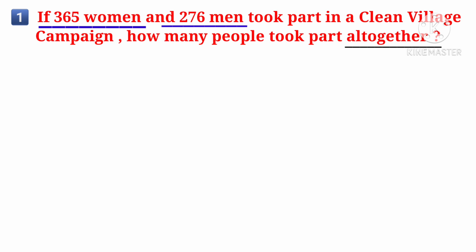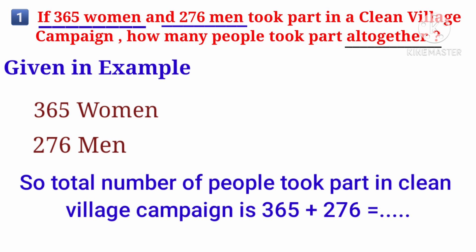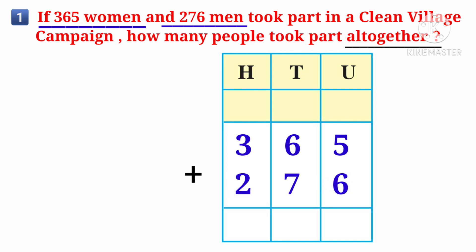First, I write down what is given in the question. What is given? 365 women took part in the clean village campaign and 276 men took part in the clean village campaign. So the total number of people who took part in the clean village campaign is equal to the number of women who participated plus the number of men who participated. I write 365 plus 276.